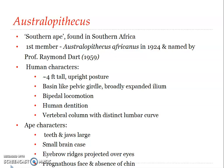Australopithecus may have manufactured implements and weapons out of bones. The vertebral column had a distinct lumbar curve — a typical character of Homo sapiens. The foramen magnum had a forward position under the base of the skull; the foramen magnum is the opening in the skull through which the spinal cord passes. Ape-like characters included larger teeth and jaws than those of humans.